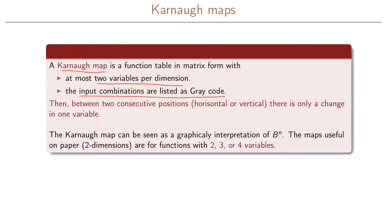And since the input combinations are listed as Gray code, this means that between two consecutive positions in our table, both horizontal or vertical, there is only one change in a variable for these two positions.